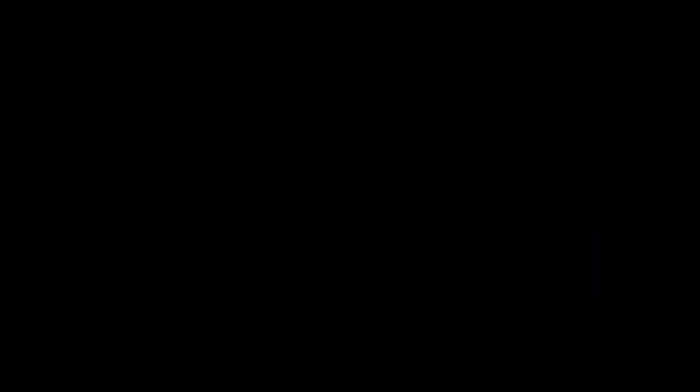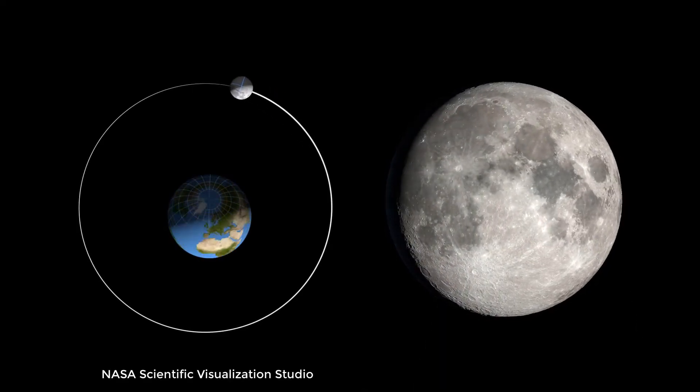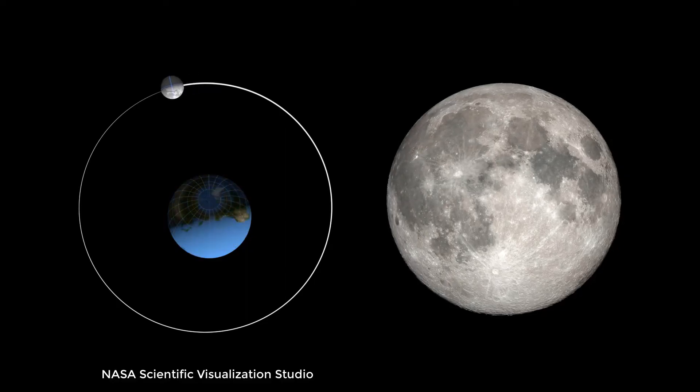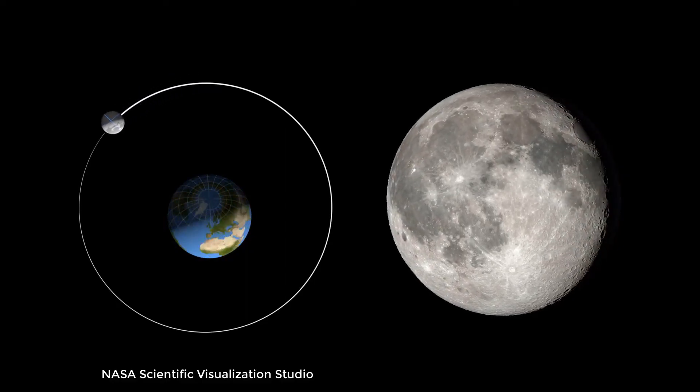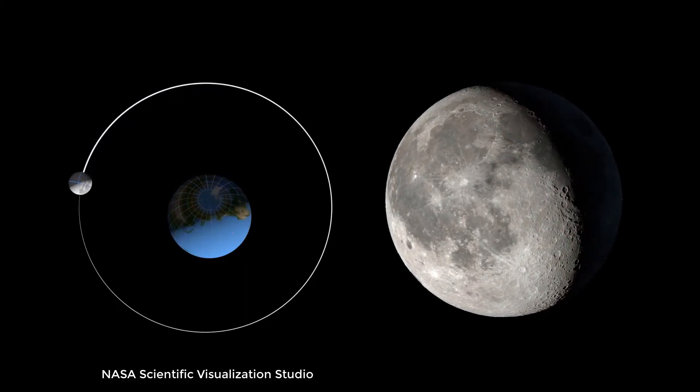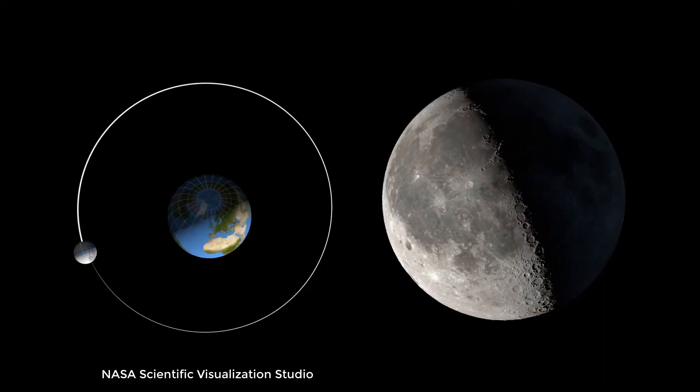Libration in latitude is the technical term. There's also a side-to-side component of libration. And this is caused by the fact that the moon does not orbit Earth in a perfect circle. The moon's orbit is ever so slightly elliptical. At certain places in the moon's orbit, it'll be moving faster, and basically the spin won't quite be able to keep up.